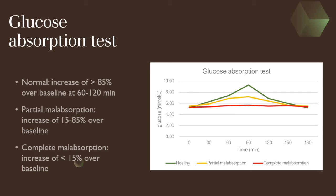As these diseases predominantly affect the small intestine, the glucose absorption test may be diagnostic. It consists of the administration of glucose through a nasogastric tube or with a sugar meal, and measurements of blood glucose in the following hours. In healthy horses, there is an increase of more than 85% over the baseline at 60–120 minutes. If there is partial malabsorption, there is an increase but of less than 85% over baseline. If the malabsorption is complete, there is absolutely no increase over the baseline.